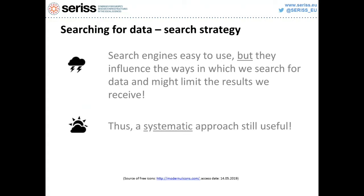A word of warning on looking for data online: we all use search engines, and of course they are easy to use. But they influence the way we search for data — for example, with single-term searches — and they may severely limit the results we see. If we go for long-tail terms or the wrong keywords, we might end up with results that are not useful for our research. Thus, a systematic approach is still useful.